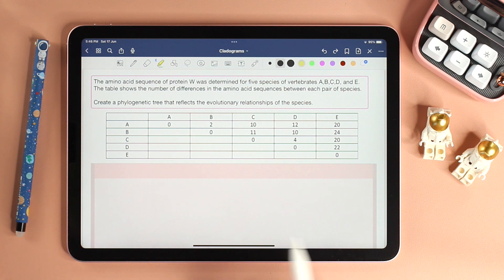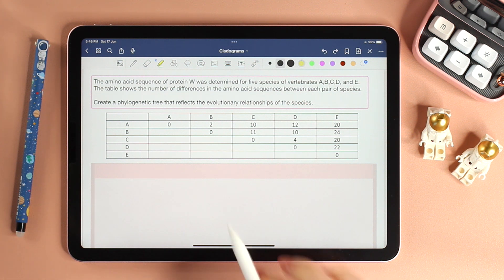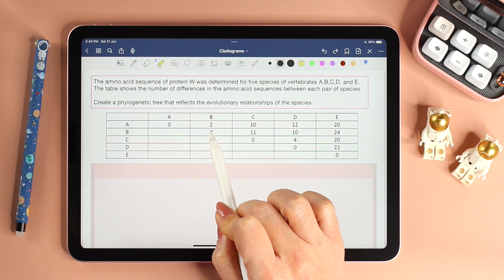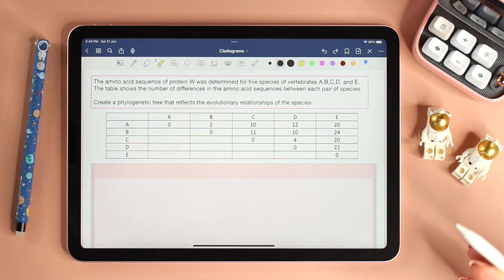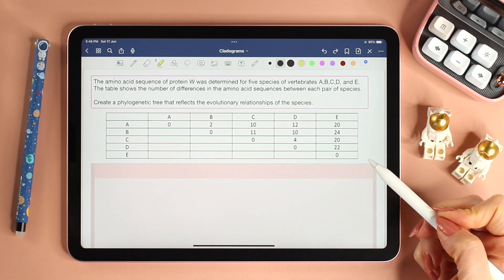The easiest way of constructing the tree is to look for the smallest number in the table. Why the smallest number? Because the smaller this number, the fewer the differences in the amino acid sequences, and hence the more similar they are.